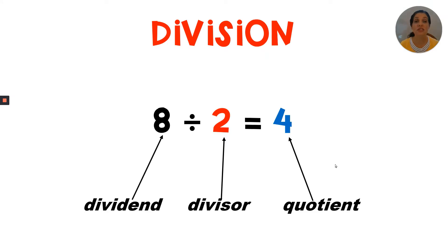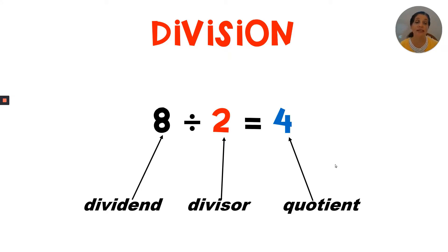Let's look at the factors as they relate to a division equation. In division, the first number is how many in all — and that's the dividend. The second number is the number of groups, and we call that the divisor. The final number is how many in each group, and we call that number the quotient.